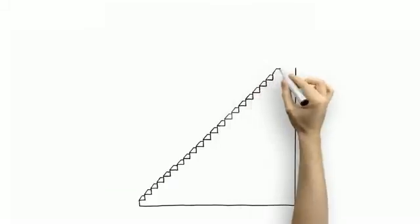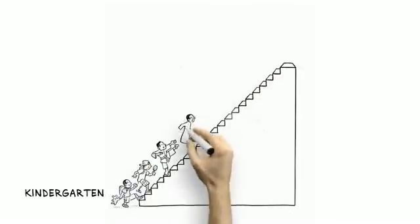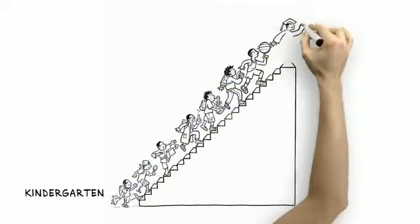Here's how it works. You can think of kindergarten through 12th grade like a giant staircase. Each step is a skill your child needs to learn before stepping up to the next one.